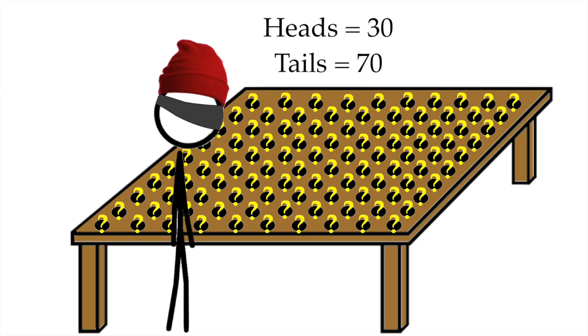Instead, you have been told in total there's 30 heads and 70 tails. But you don't know which coins are heads or tails. Only their totals, 30 and 70.